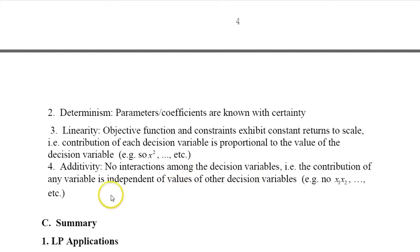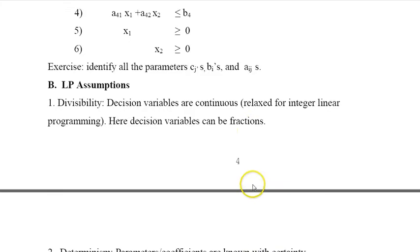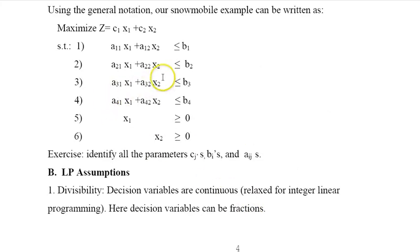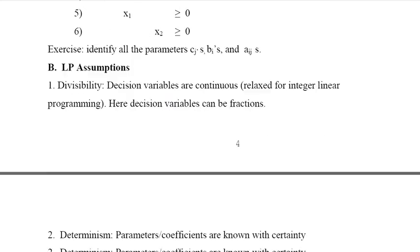The fourth constraint is additivity - no interactions among decision variables. The contribution of any variable is independent of the various values of the other decision variables, which means I don't have x1 times x2, so plus 3x1 times x2 ≤ something. So there's no interaction or x1 squared times x2 and so on.